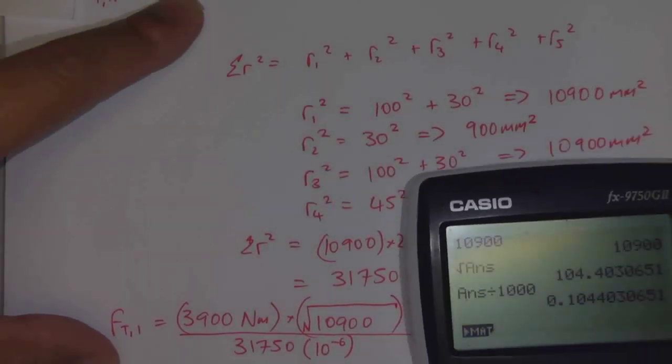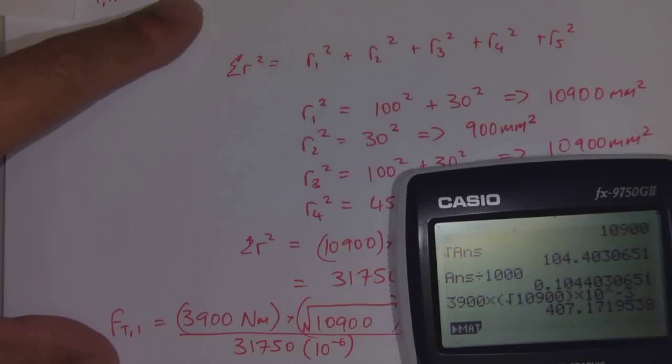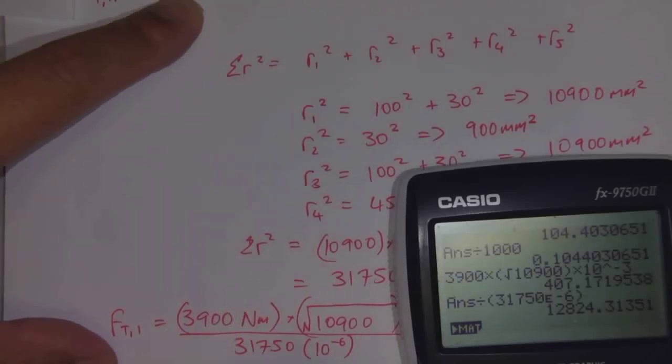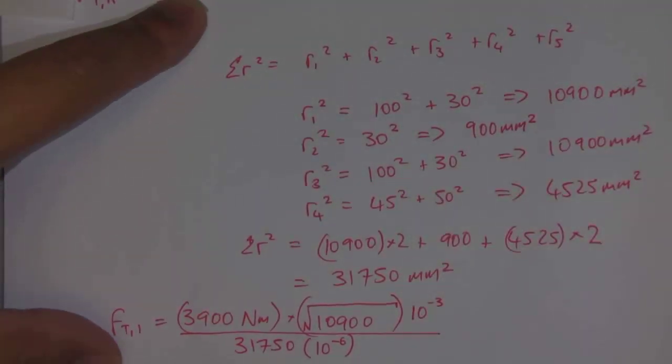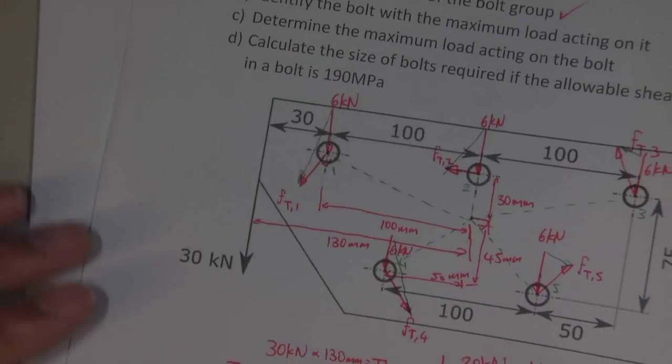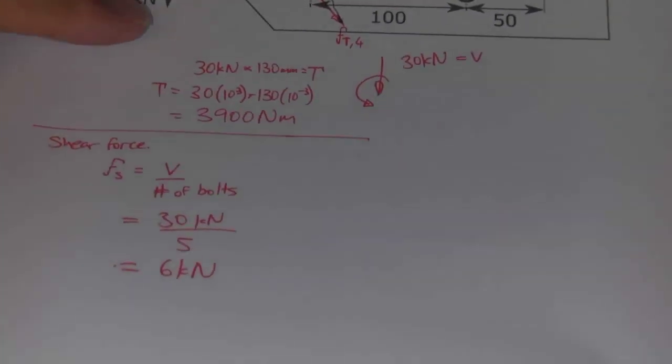Now we can try to calculate that value. So 3,900 times the square root of 10,900, and then all of that divided by 31,750 exp minus 6. Now I've got the amount of force acting on that particular bolt. FT1. And so that value is equal to 12,824 Newtons.